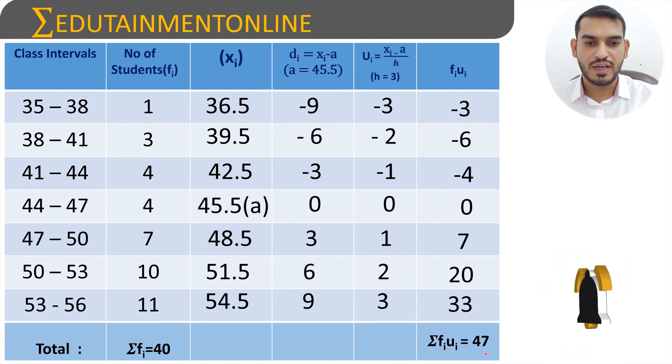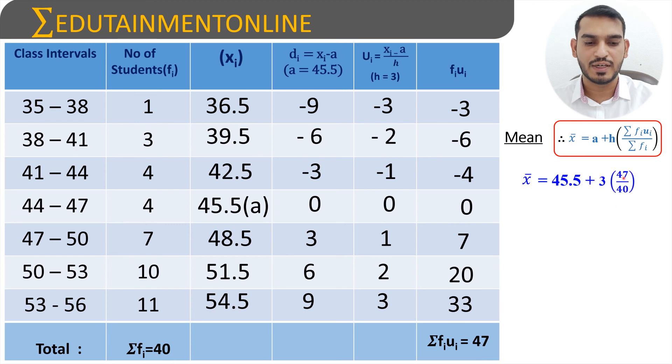Adding up all this, sigma of fi ui will be 47. Now the mean formula is a plus h into sigma of fi ui by sigma of fi. a is 45.5, and h is 3, and sigma of fi ui is 47, and sigma of fi is 40. Let us substitute all these values here.